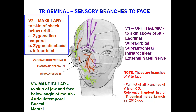This is the maxillary nerve: the skin of the cheek below the orbit via the zygomaticotemporal and zygomaticofacial nerves. Here we have the ophthalmic — the skin above the orbit — via lacrimal, supraorbital, supratrochlear, infratrochlear, and external nasal branches. Note these are all branches of the trigeminal nerve.